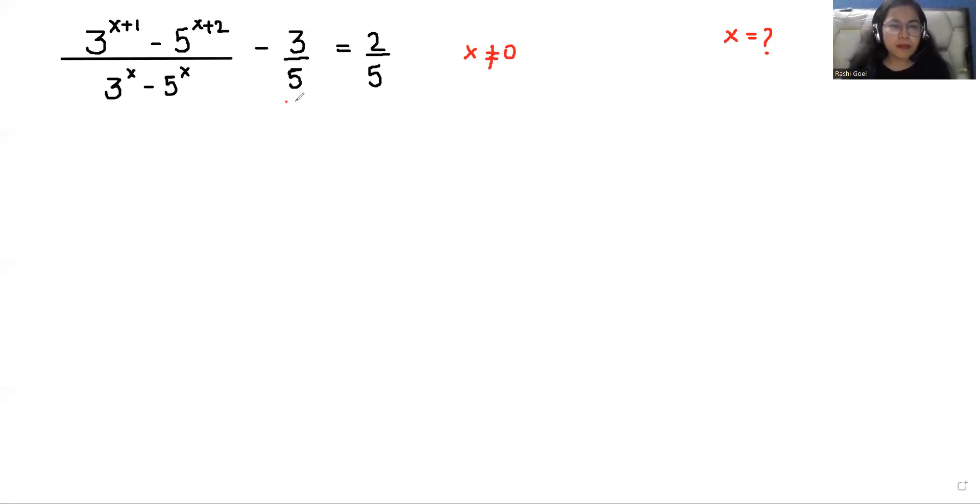We will take this 3 by 5 to other side. Now the equation becomes 3 power x plus 1 minus 5 power x plus 2 over 3 power x minus 5 power x is equals to 2 by 5 plus 3 by 5.